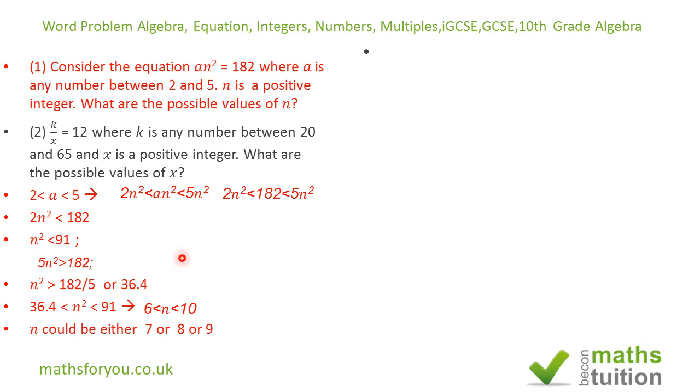To check, if we divide 182 by the squares of each of these numbers: 182/81 = 2.25, which is between 2 and 5. Again, 182/49 = 3.71, which is also between 2 and 5.